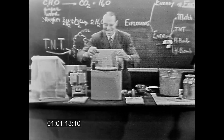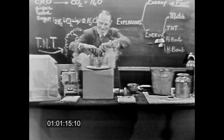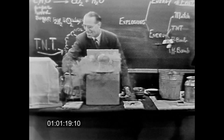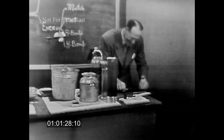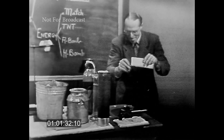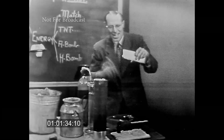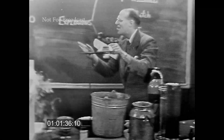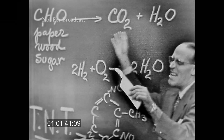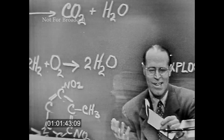No magic. No magic at all. Now when the paper begins to burn, you see, it begins to combine with oxygen in the air. Now the paper is made up of carbon, hydrogen, and oxygen. And as it burns, it forms carbon dioxide and water. This is a simple chemical reaction. In fact, you can see that white paper turning into black carbon.